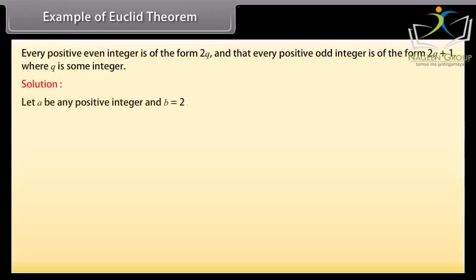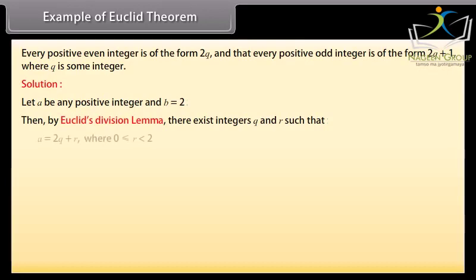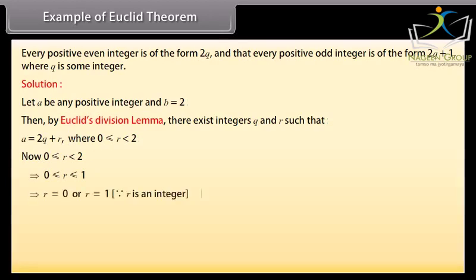Solution: Let A be any positive integer and B equals 2. Then by Euclid's division lemma, there exist integers Q and R such that A equals 2Q plus R, where 0 is smaller than or equal to R is smaller than 2. Now 0 is smaller than or equal to R is smaller than 2, which implies 0 is smaller than or equal to R is smaller than or equal to 1, which implies R equals 0 or R equals 1 because R is an integer.